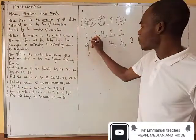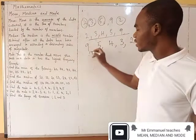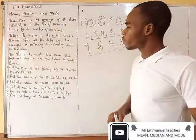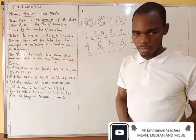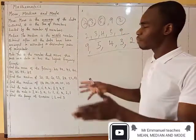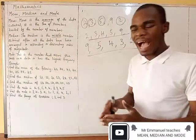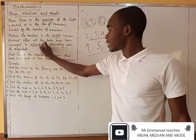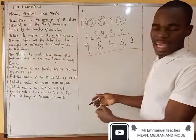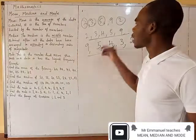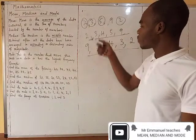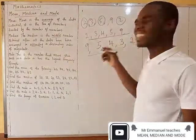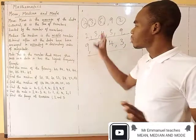Ascending — smallest to biggest. Descending — biggest to smallest. So before you can find the median, you must first arrange the numbers either from smallest to biggest, as in ascending order, or descending, which is biggest to smallest. You must first arrange it in ascending order before you can pick the middle number.